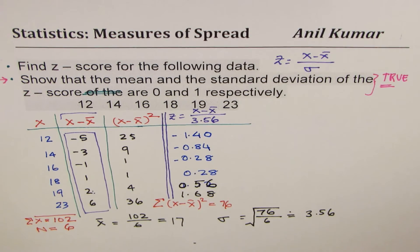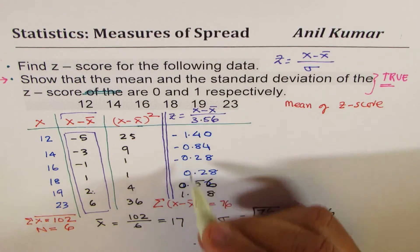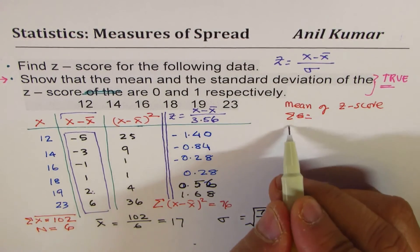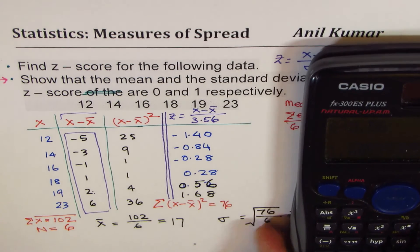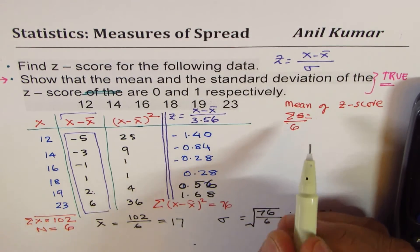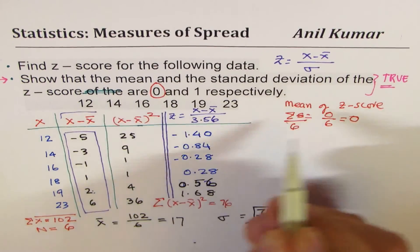Now let's try to find what is mean of the z-score. So we'll add them up and divide by 6. Let's add positive values first: 1.68 plus 0.56 plus 0.28, then we'll take away 0.28, take away 0.84, and take away 1.40, and it comes to 0. So the numerator is 0. 0 over 6 is indeed 0. So we are sure that the mean is 0.